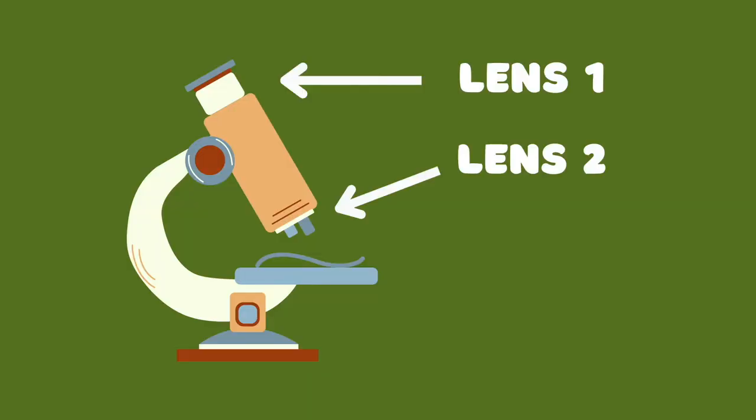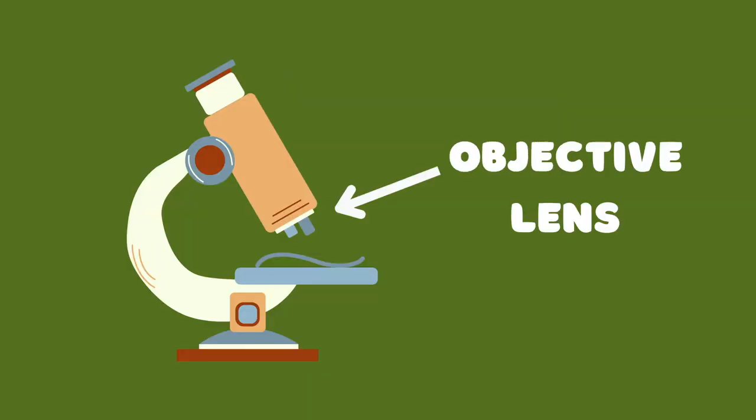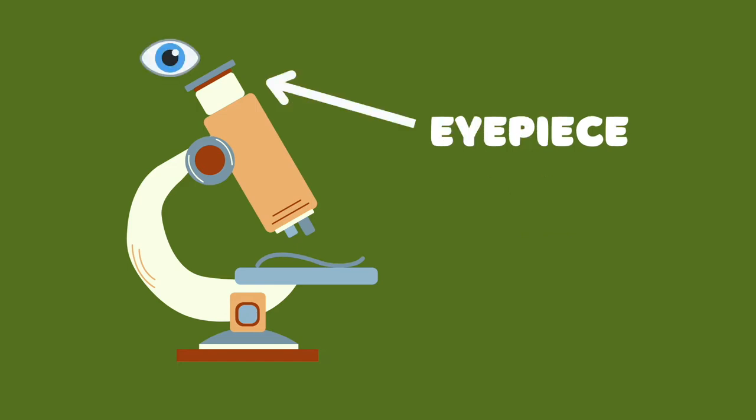Microscopes generally use two convex lenses in order to magnify objects. The lens closest to the specimen is the objective lens, while the one we look through is the eyepiece.